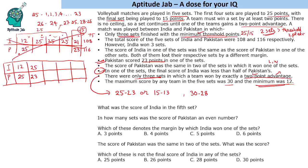Now we need to check the condition that the maximum score is 30, so one of the score lines is 30-28. Also, since 15-13 is now eliminated, one score line is 30-28. Let's take the case that Pakistan scores 30 — so India scores 28 in that set.